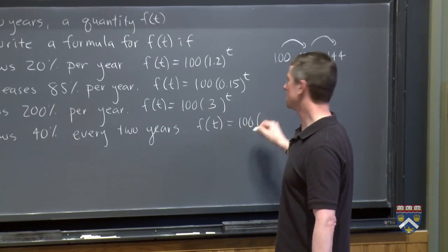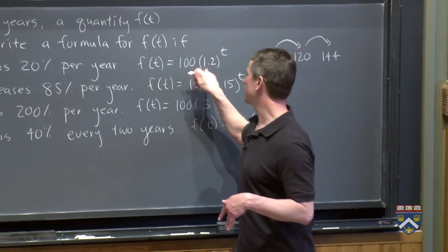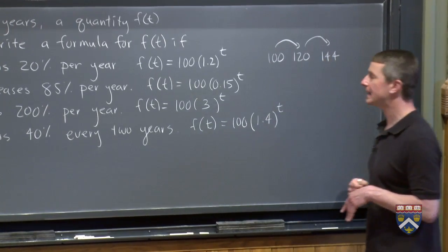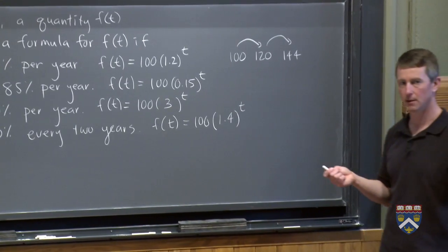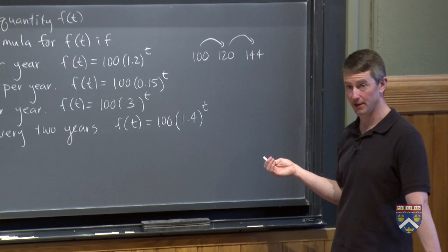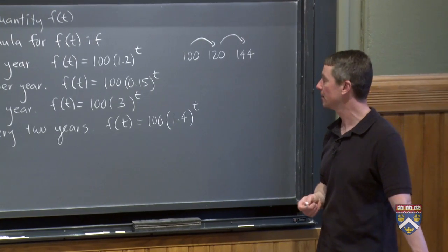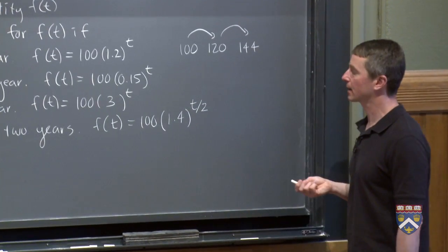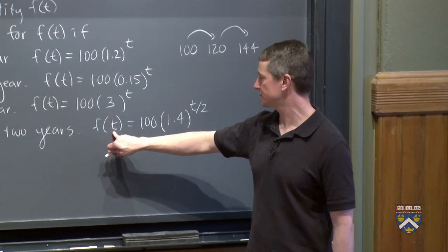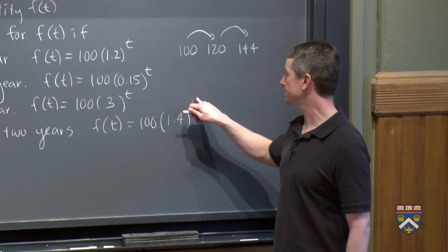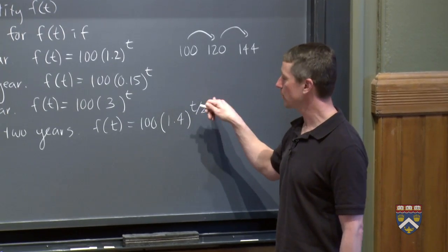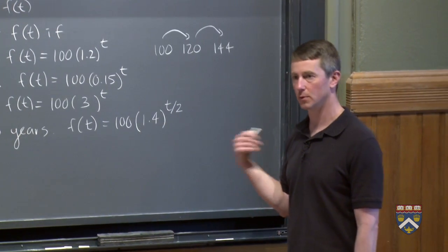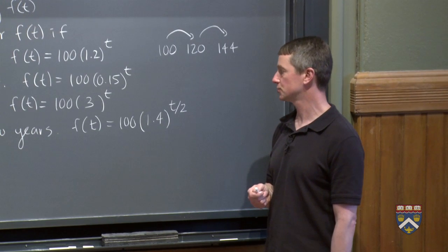So we'll start with our 100. Growing 40%, growing 20% meant we put a 1.2. Growing 40% means we should put a 1.4. But if I put a 1.4 and I put a T up there, we're growing 40% how often? This would mean we're growing 40% every year, which is twice as fast as we want it to happen. So the way we fix that is by putting T over 2 up here. Now let's check. When I plug in 2 for T, f(2), I get 100 times 1.4 to the 2 over 2, which is exactly 1. So my exponent becomes 1 after two years. And I've got 100 times 1.4, which is 140, which is a gain of 40% in two years.